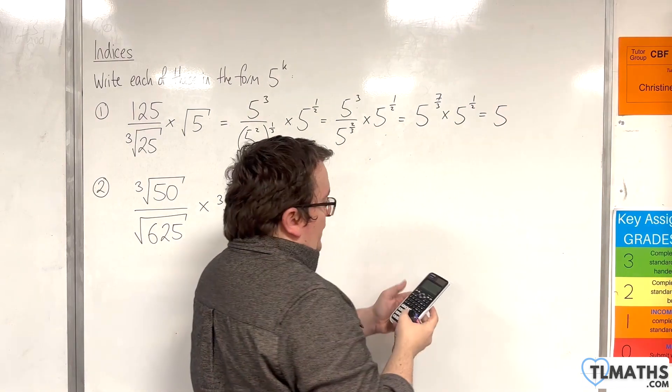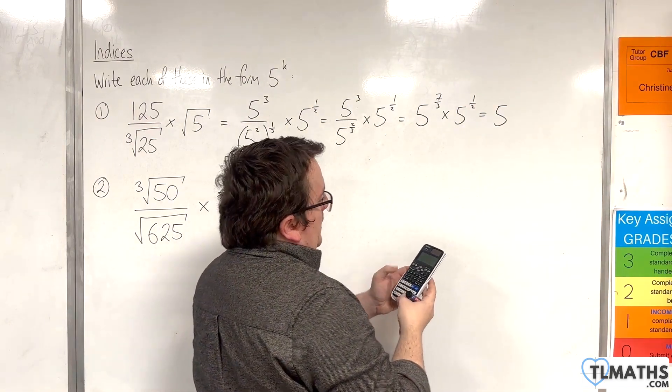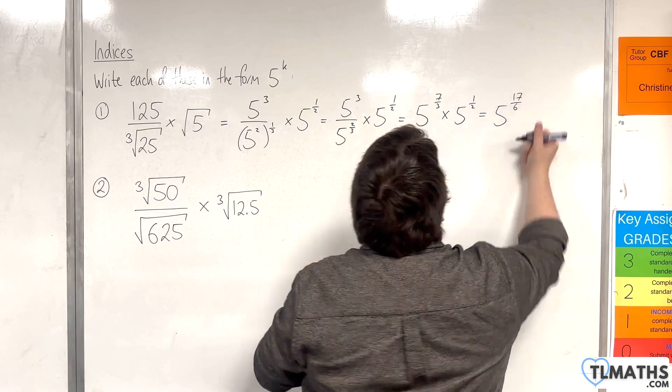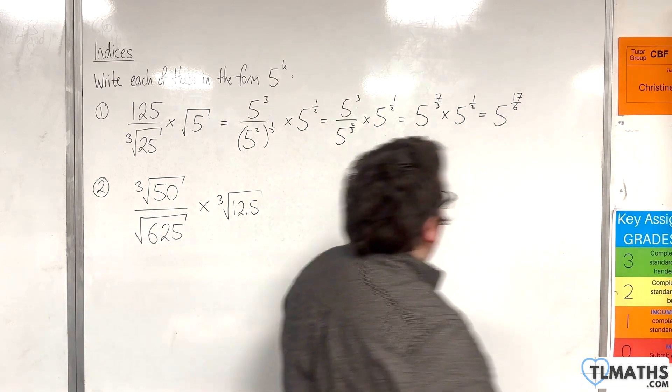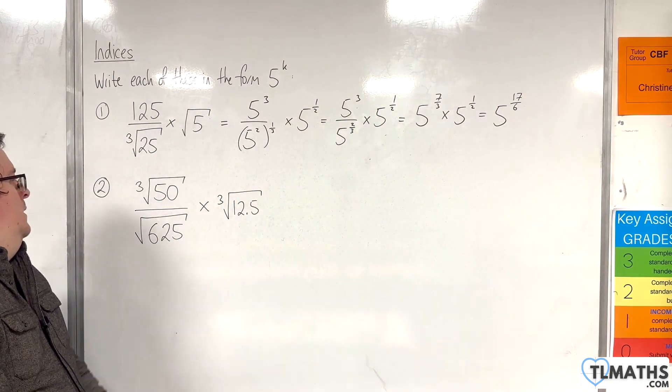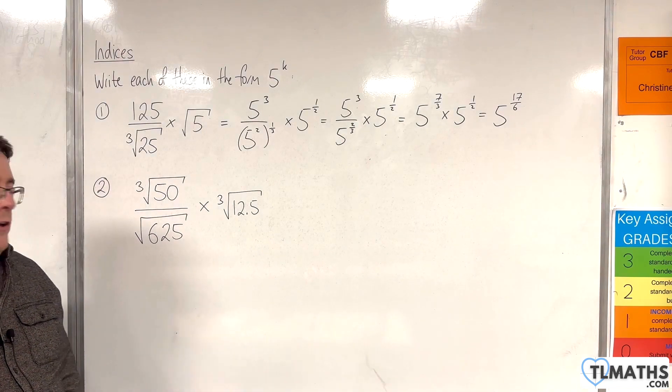And then we can add the indices. So 7 thirds plus 1 half is 17 sixths. Okay, now let's take a look at number 2.